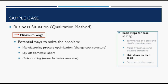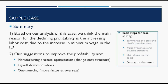After finding the root cause, you identify potential solutions. The first way is to change the cost structure: one option is to optimize the manufacturing process; another is to lay off some domestic labor; and a third is outsourcing — moving the factory overseas so the minimum wage restriction is no longer a problem. All three contribute to your potential solution. Finally, you summarize the case: the main reason for declining profitability is increasing labor cost due to the increase in the US minimum wage, and your suggestions to improve profitability are the three options just mentioned. That concludes the case.